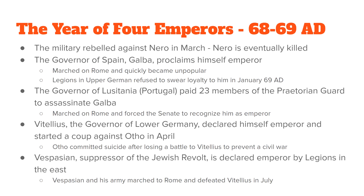In January 69, Galba was in charge, but the governor of Lusitania — what is today Portugal — named Otho paid members of the Praetorian Guard to kill Galba. So Galba was assassinated by Otho. The reason Otho assassinated Galba is that Otho thought he was next in line for the throne, and when he was passed over it made him completely furious.